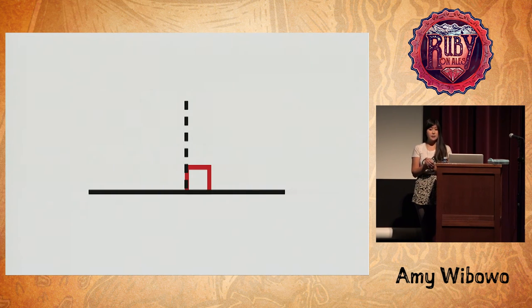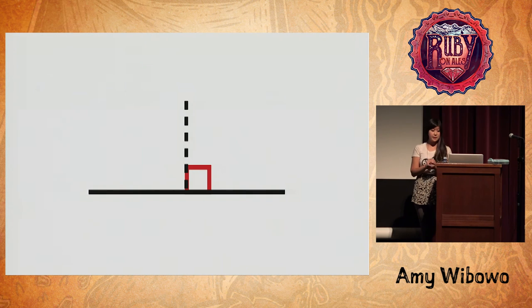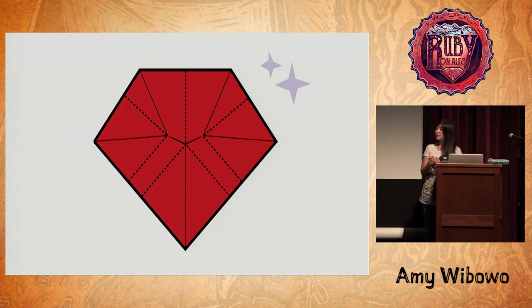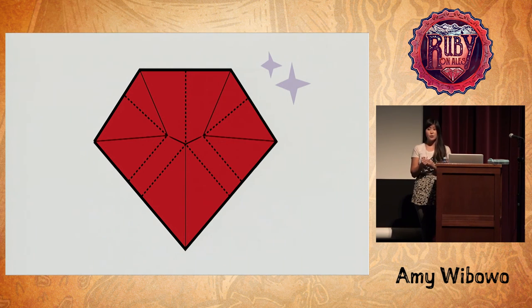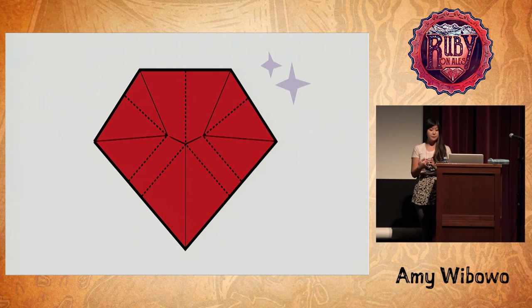It turns out we won't need all of them, but none of them will hurt foldability or affect one-cut ability. Here's what we get if we draw perpendiculars from every straight skeleton vertex in the Ruby that we generated earlier.